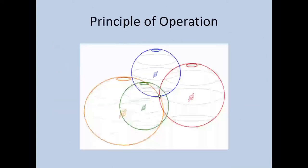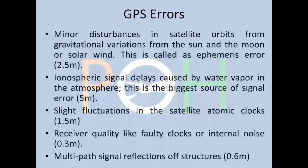There are certain errors in GPS. Minor disturbances in satellite orbits from gravitational variations from the sun, moon, or solar wind are called ephemeris errors — around 2.5 meters. Ionospheric signal delays caused by water vapor in the atmosphere are the biggest source of error — around 5 meters. Slight fluctuations in satellite atomic clocks contribute 1.5 meters, receiver quality issues 0.3 meters, and multi-path signal reflections off structures around 0.6 meters. These are very minute errors relative to the size of the Earth, so GPS is highly accurate.